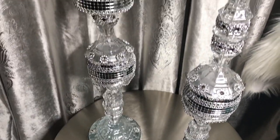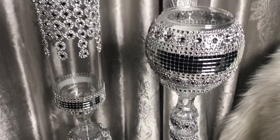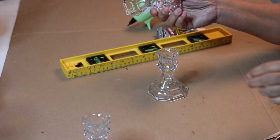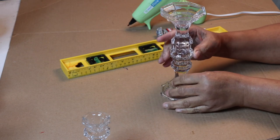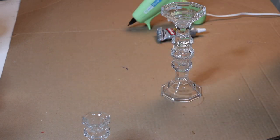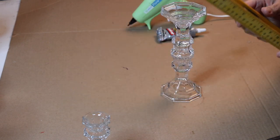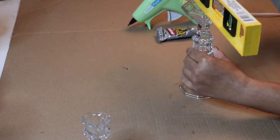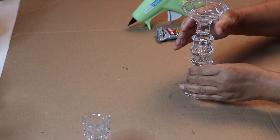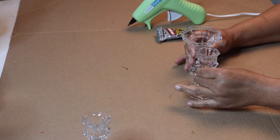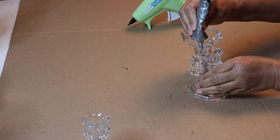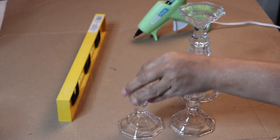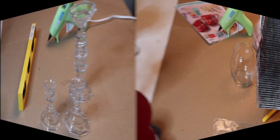Starting out, I'll glue these two Dollar Tree candle holders together. Before I glue them, I'm going to try and level them out by continuously turning the top candle holder around until it levels out. Now remove the top candle holder, apply the glue, then put the candle holder back on top without changing the position. I'll repeat these steps with the second set of candle holders.